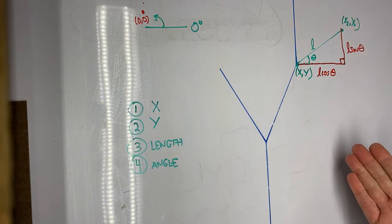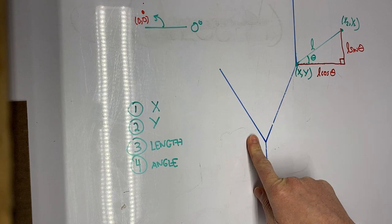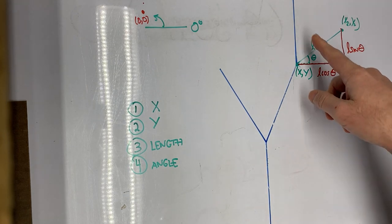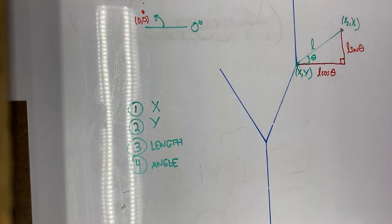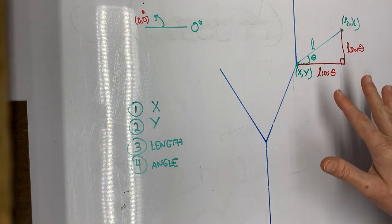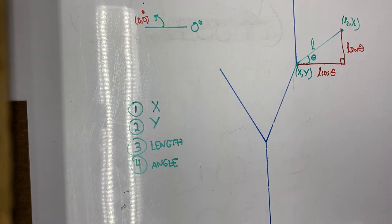You may be asking, well, what happens for branches like over here and things like that? As theta gets greater than 90 degrees, just try it like this first. You may be pleasantly surprised how this all works out.